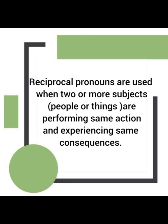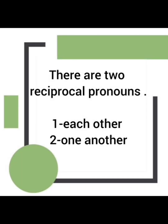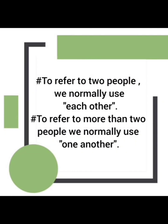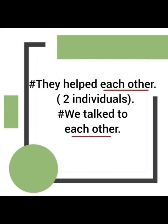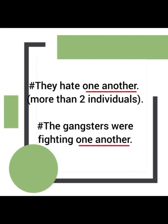Next we have reciprocal pronouns. Reciprocal pronouns are used when two or more subjects are performing the same action and experiencing the same consequences. There are two: 'each other' and 'one another'. When referring to two people, we use 'each other'. For more than two, we use 'one another'. For example: 'They helped each other' — two individuals. 'We talked to each other.' 'They hate one another' — more than two. 'The gangsters were fighting one another.'